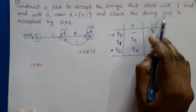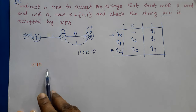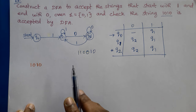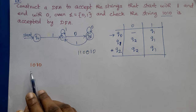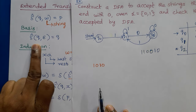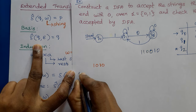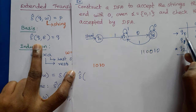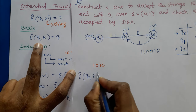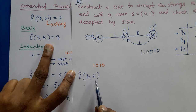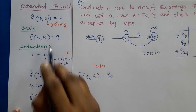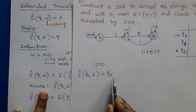Now we need to check whether 1010 is accepted by our DFA using the extended transition function. First, write the basis condition: delta-cap(Q0, epsilon) = Q0. That is, if we are in state Q0 without reading any input, we remain in Q0.